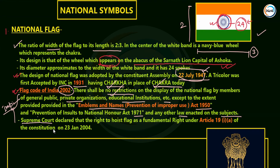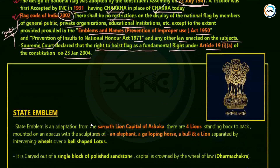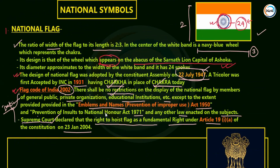There is also a judicial order by the Supreme Court stating that the right to hoist the national flag is a fundamental right under Article 19 of the Constitution of India. This pronouncement came on 23rd January 2004. Article 19 provides for six fundamental rights: right to freedom of speech and expression, assembly, association, movement, residence, and profession.